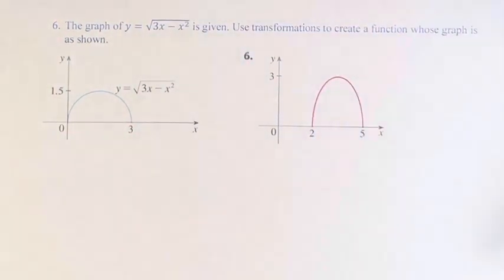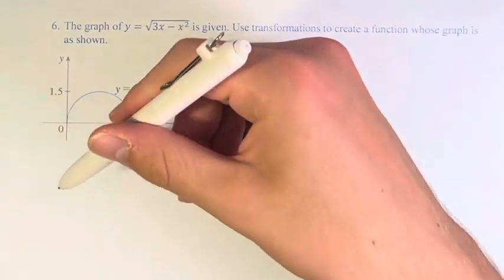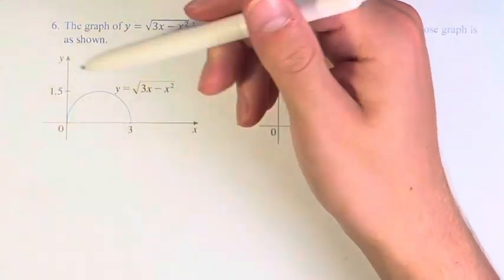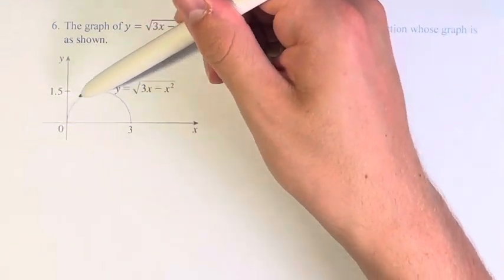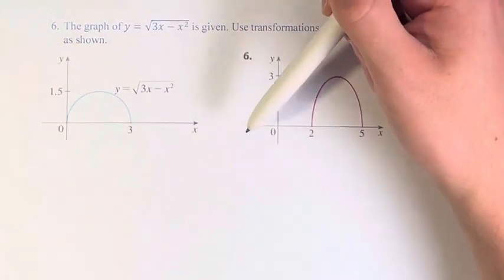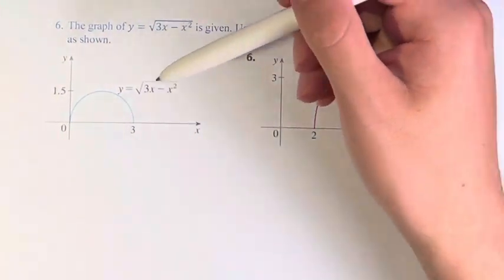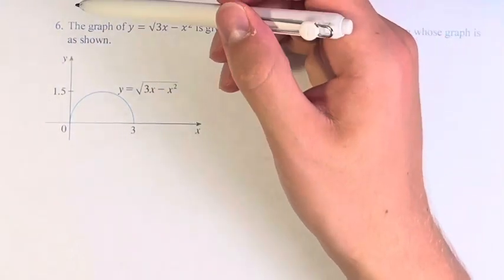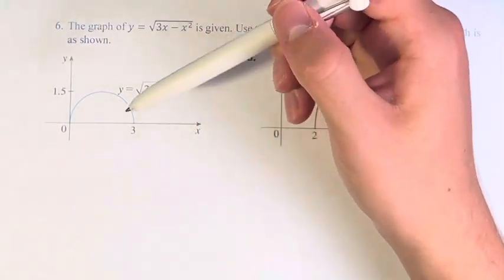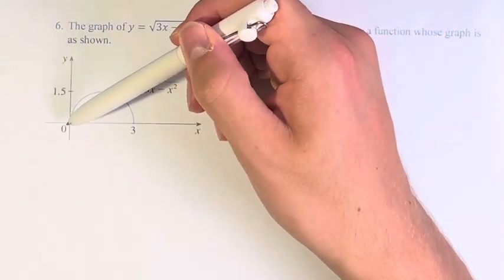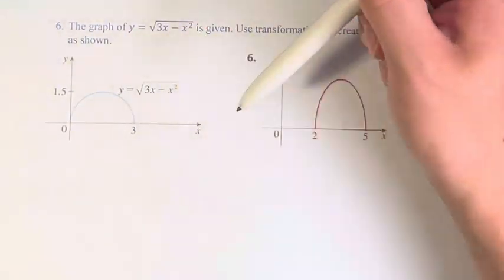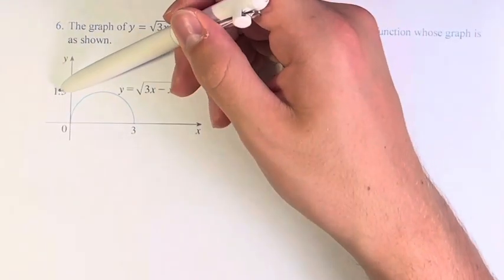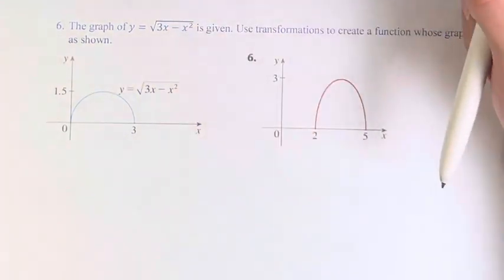So here we have a semicircle, or at least what looks like a semicircle, and we have it going from 0 to 3, and it reaches a height of 1.5.